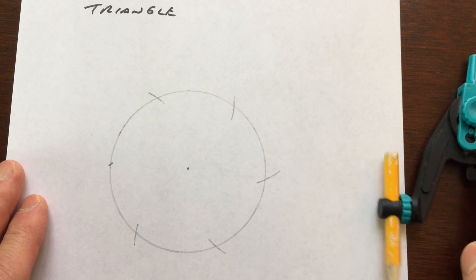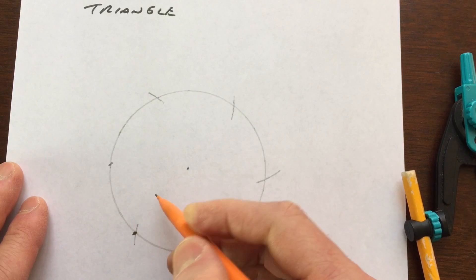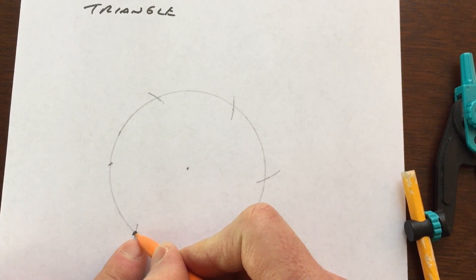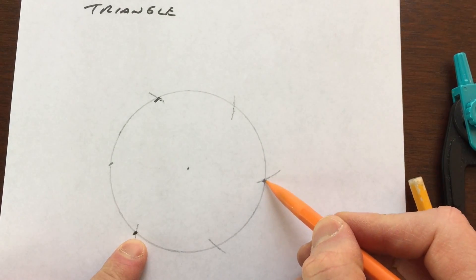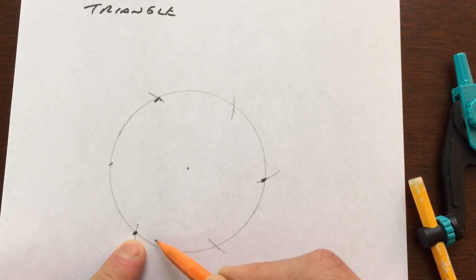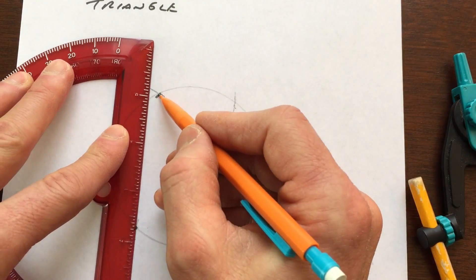The next thing we're going to do is use every other intersection point. I'm going to use this point here, skip this one, go to the next one, skip this one, go to the next one, skip this one and go to the next one. If we use every other point of intersection and connect those with line segments, that's going to be an equilateral triangle.